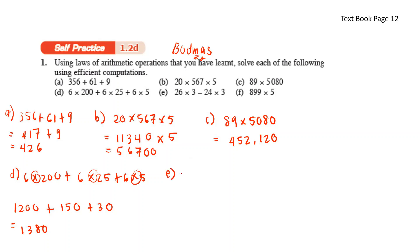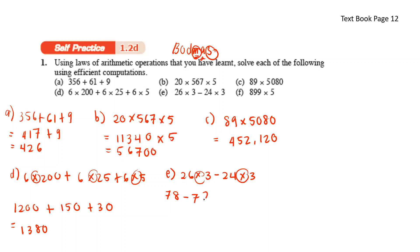26 times 3 minus 24 times 3 — according to BODMAS, multiplication comes before subtraction. So: 26 times 3 is 78, and 24 times 3 is 72. 78 minus 72 gives 6.